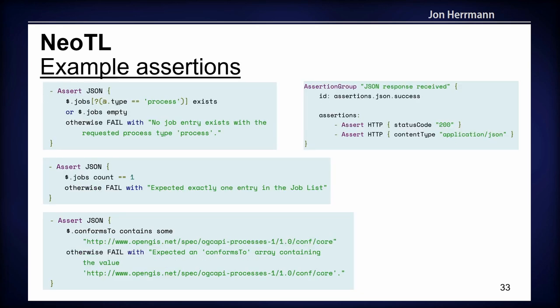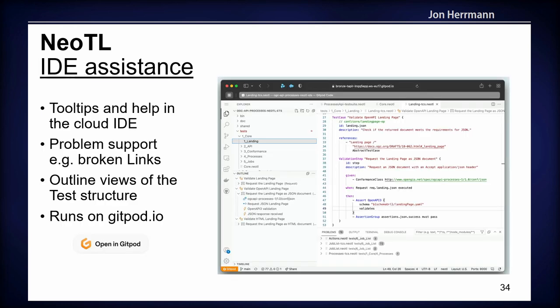Here are some examples of what can be asserted — in this case, these are JSON assertions for OGC API Processes. If you're asking whether you need to learn a new language: in some parts you can reuse your knowledge of XQuery or JSON Path in the assertions. For everything else, the IDE will assist you with a context menu — if you add a JSON Path assertion, you get tooltips from the IDE.